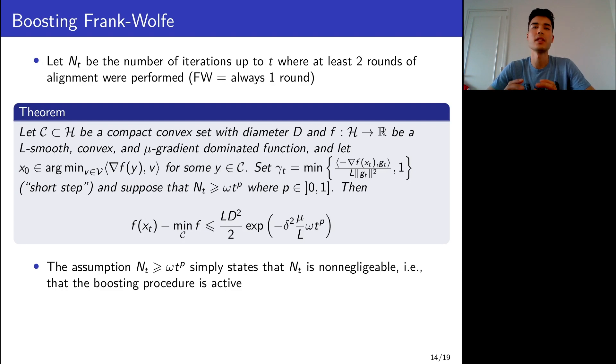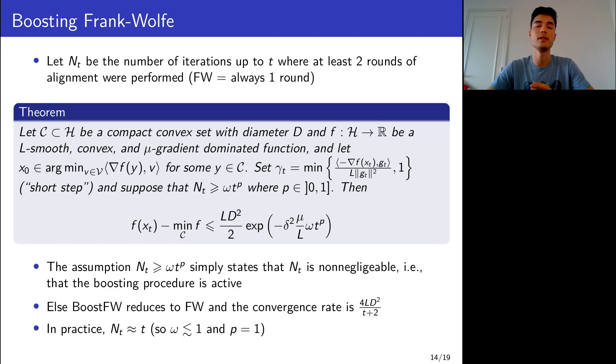That is, we're just doing Frank-Wolfe. So of course, in that case, the convergence rate is just that of Frank-Wolfe, that is 1/t. So here you might wonder, maybe in practice, the boosted procedure is never used. Well, actually, it is always used. And actually, n_t is almost equal to t. So this really proves that in practice, there was a lot of room for improvement for Frank-Wolfe and that the boosting procedure, this boosting method really achieved this improvement.